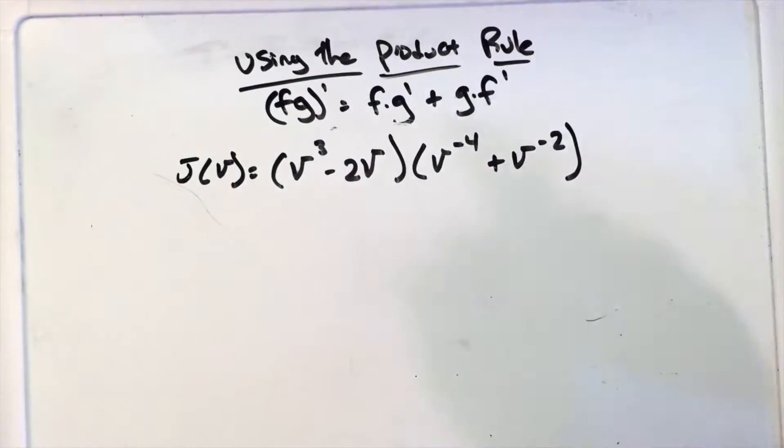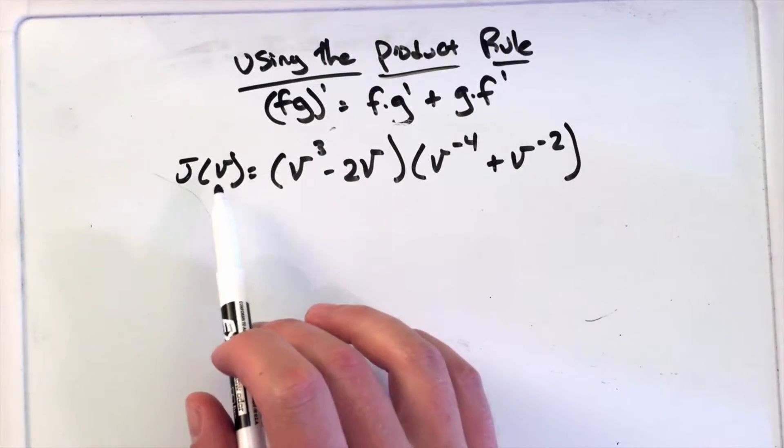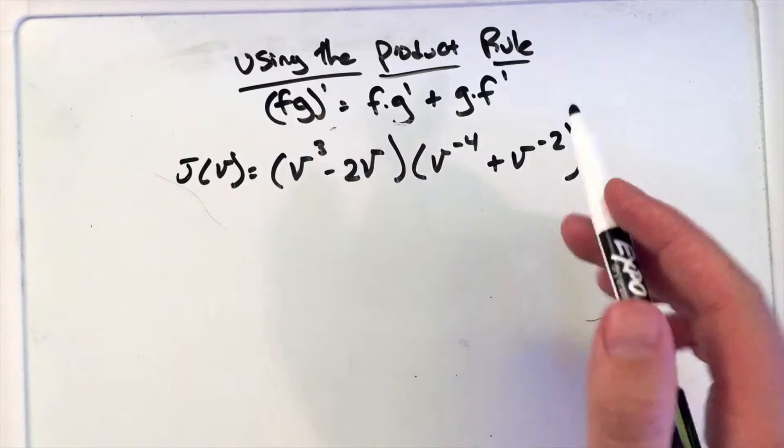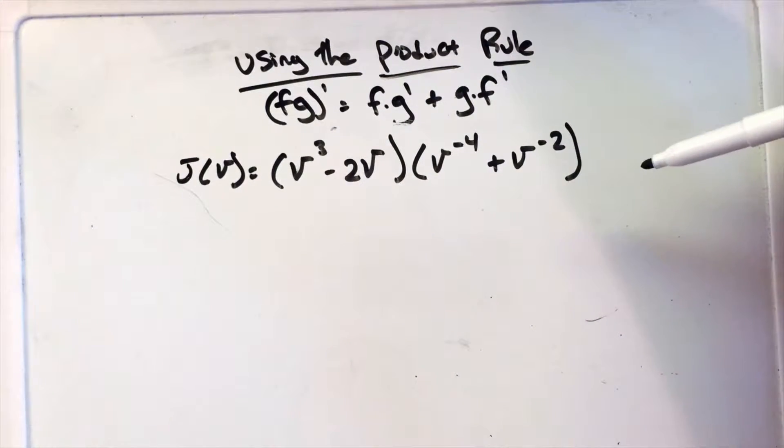In this video, we're going to use the product rule to derive the function j(v) equals (v³ - 2v) times (v^-4 + v^-2).